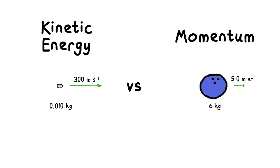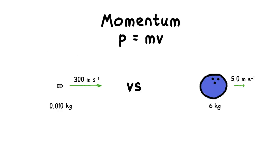You have given the bullet a higher speed, but the bowling ball a larger mass. For this set of numbers, the bowling ball has a larger momentum.